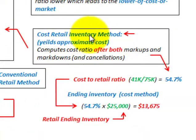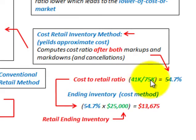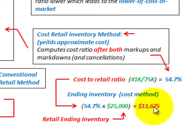The cost-to-retail method yields an approximate cost, computing the ratio after both markups and markdowns and their cancellations are considered. To determine ending inventory at cost using the cost method: the cost-to-retail ratio is $41,000 divided by $75,000 equals 54.7%. Taking this ratio of 54.7% times ending inventory at retail of $25,000 gives us ending inventory at cost of $13,675.